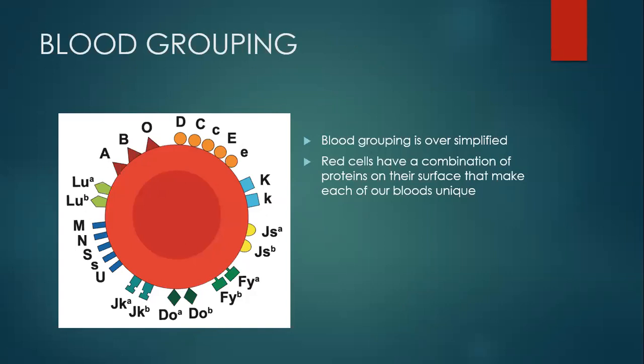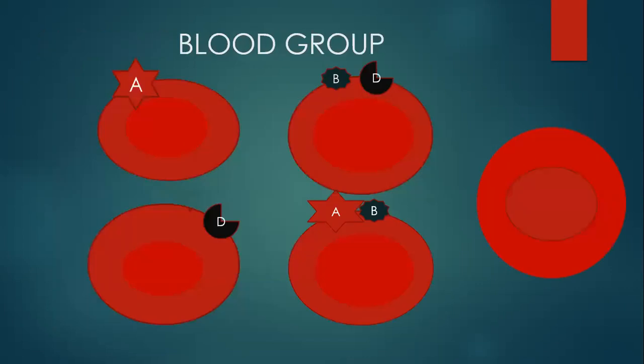When somebody says your blood group is A, they're just talking about the A antigen. But what about the B antigen and the other ones? Your blood group is very unique — it's a product of all these antigens, like a fingerprint. There's no blood that is exactly the same as another. We say your blood group is A when you have the A antigen on your red blood cells.